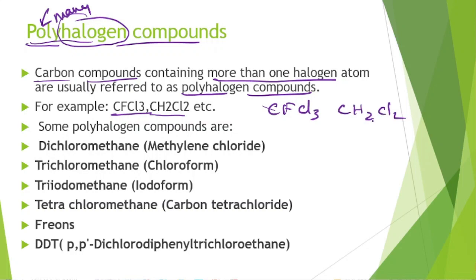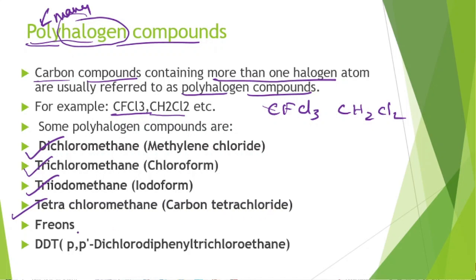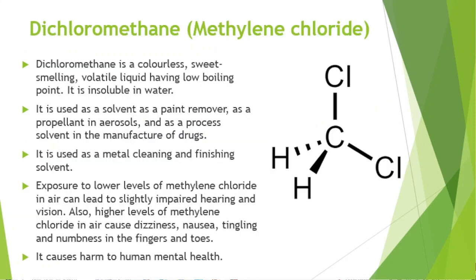The polyhalogen compounds we are going to learn about in this lesson are: dichloromethane (methylene chloride), triiodmethane (iodoform), tetrachloromethane (carbon tetrachloride), freons, and DDT — dichlorodiphenyldichloroethane. Now let's look at dichloromethane.